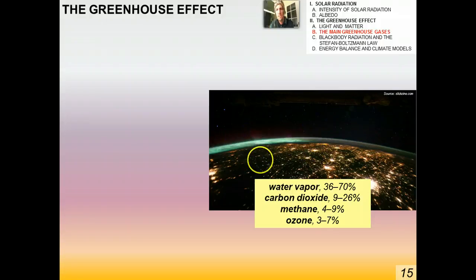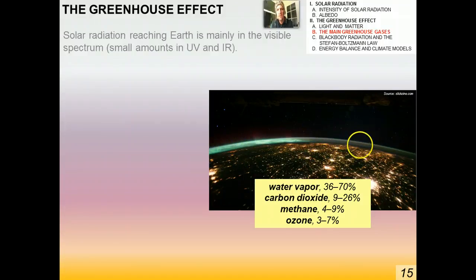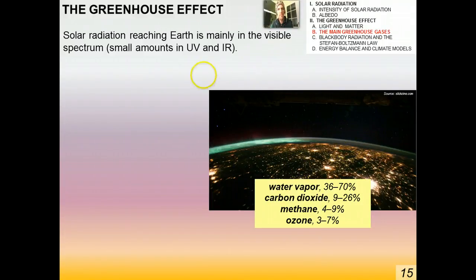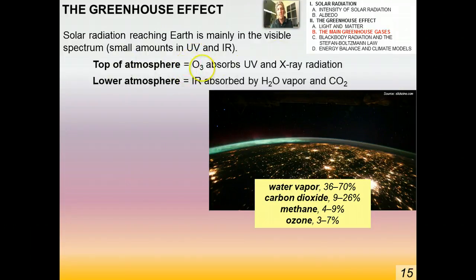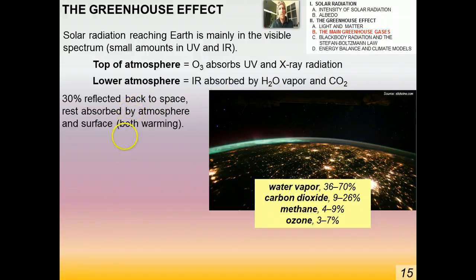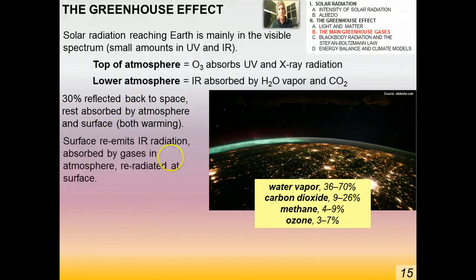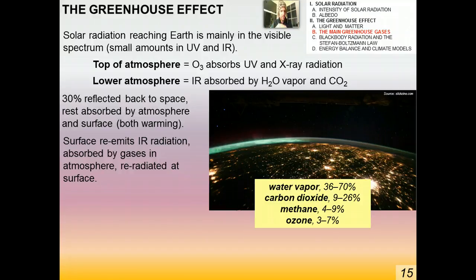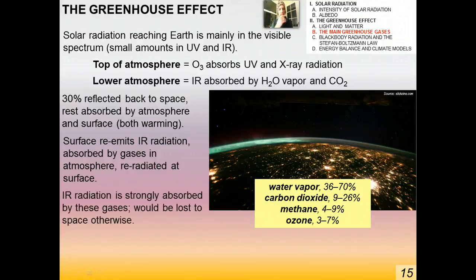This is an amazing picture taken from the International Space Station, showing just how thin and fragile our atmosphere really is. Solar radiation reaching the Earth is mainly in the visible spectrum, with small amounts in ultraviolet and infrared. At the top of the atmosphere, ozone absorbs UV and X-ray radiation, protecting us — that's the connection to the ozone layer and skin cancer. In the lower atmosphere, water vapor and CO2 are the main agents that absorb infrared radiation coming from the Earth and the rest of the atmosphere. If 30% of incoming radiation is reflected back to space, then 70% is absorbed by the atmosphere and surface, both warming. The surface re-emits the incoming higher-frequency radiation as infrared, which is absorbed by atmospheric gases and re-radiated back down.